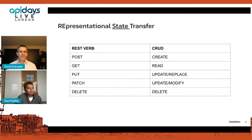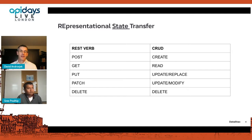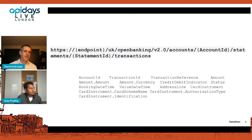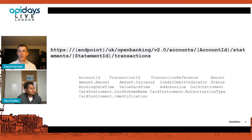When we think about REST APIs — Representational State Transfer — we're transferring state, which is typically stored in a database. The REST verbs map very neatly to database operations, the CRUD operations we all know. Even looking at an open banking API where we're getting account information, you can see the very valuable data being returned by that API.